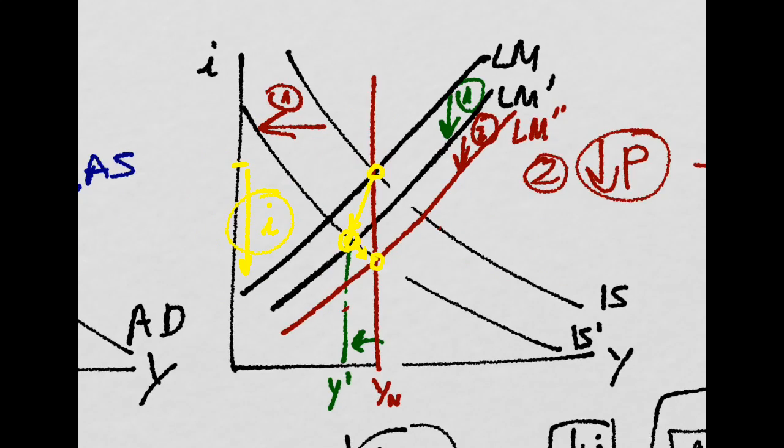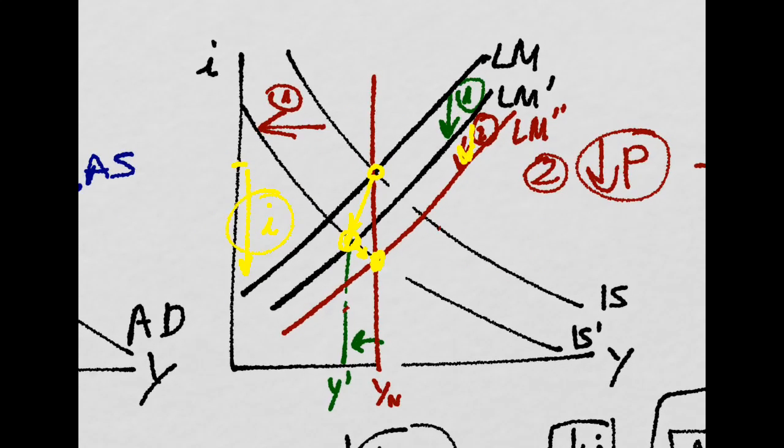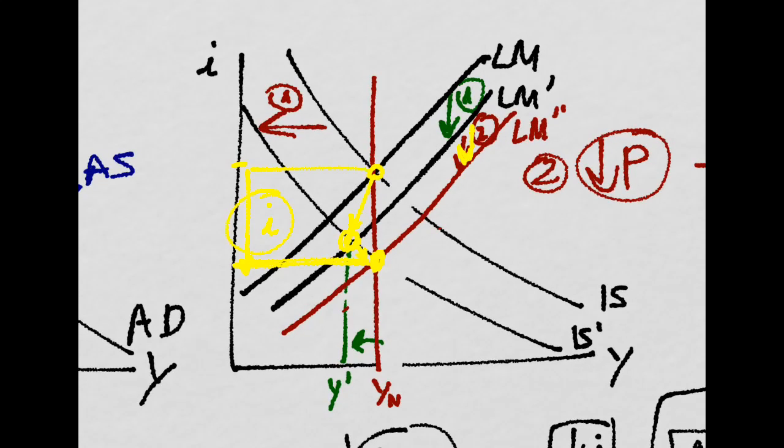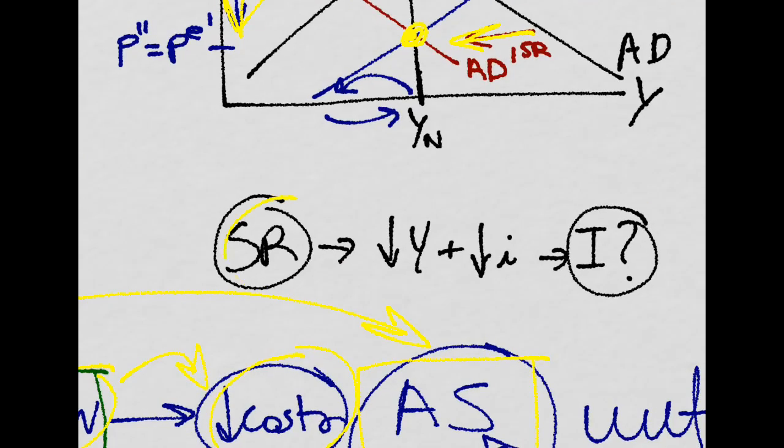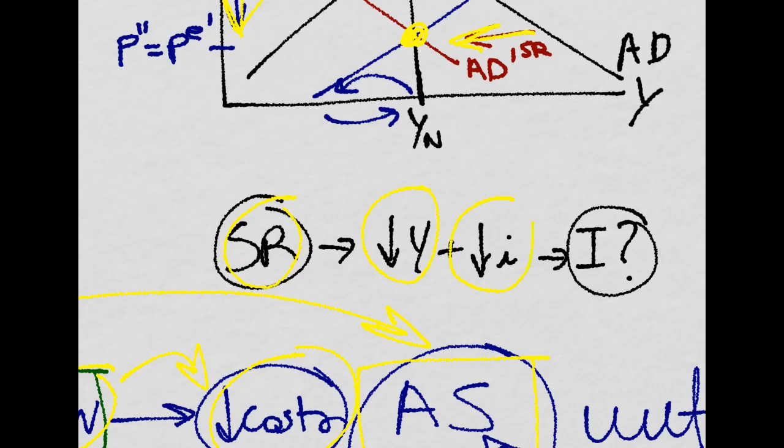That is, the second shift down, until output is equal to potential output and we are at a much lower interest rate. So notice, that in the short run, we had that output had gone down and also the interest rate.